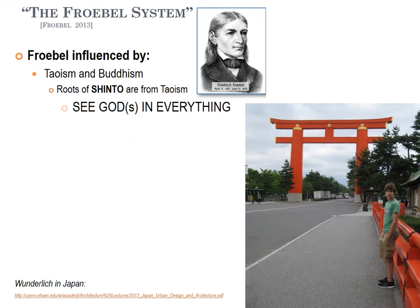Froebel was influenced by Taoism, Buddhism, and the roots of Shinto. Japan has two main religions — Shinto and Buddhism. Taoism is mainly from China but came in and mixed with the indigenous religions of Japan early on, forming one of the two main religions in Japan.